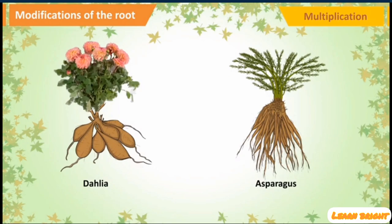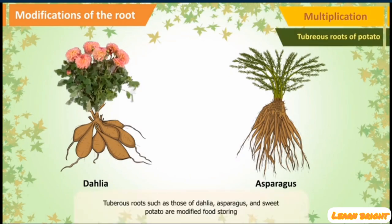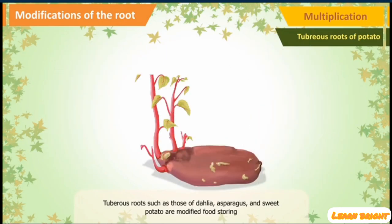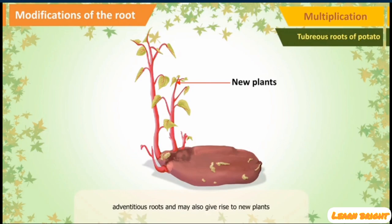Multiplication: Tuberous Roots. Tuberous roots such as those of dahlia, asparagus and sweet potato are modified food-storing adventitious roots and may also give rise to new plants.